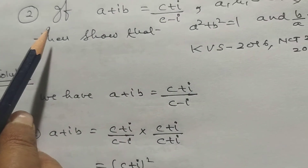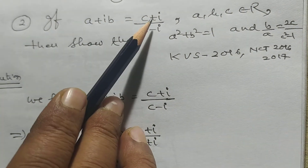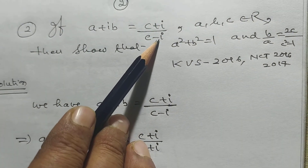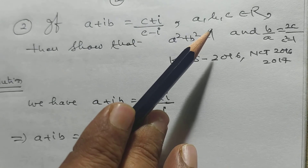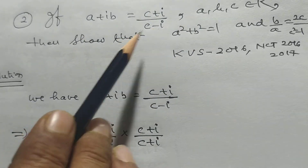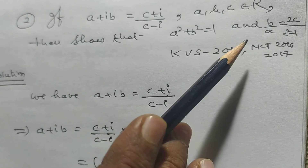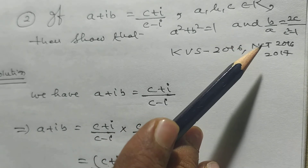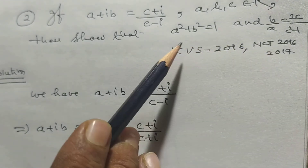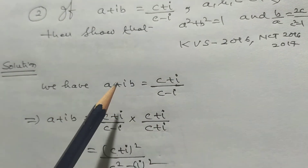Problem number 2: if a+ib = (c+i)/(c-i), where a, b, c belong to real numbers, then show that a²+b² = 1 and b/a = 2c/(c²+1). This is a very important problem.